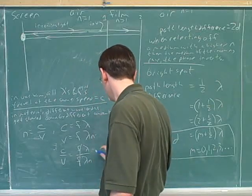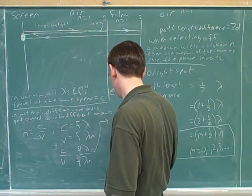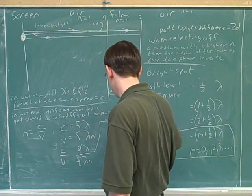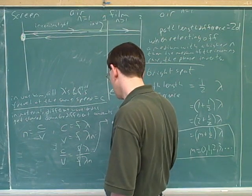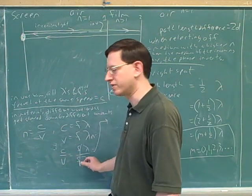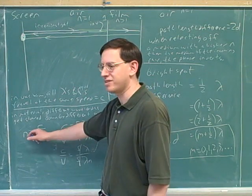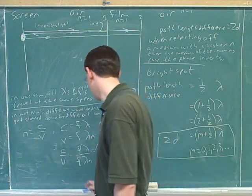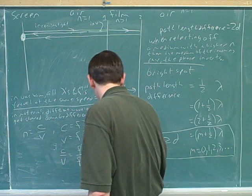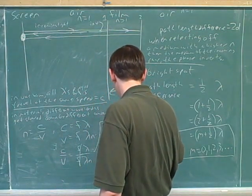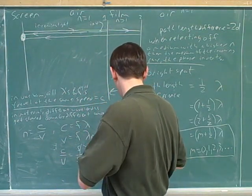And that's going to give us C over V equals lambda over lambda N. Now what's C over V? That's N. That's our index of refraction. So that tells us that N is lambda over lambda N.